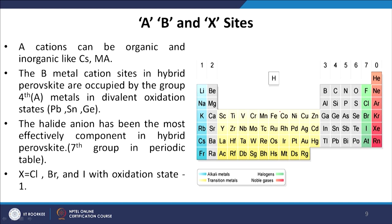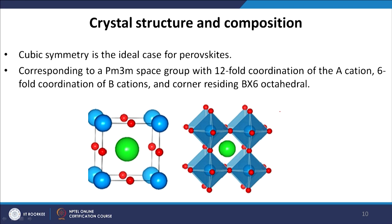A cations can be organic or inorganic, like cesium or CH3NH3 methylammonium. The B metal cation sites in hybrid perovskites are occupied by group four metals in divalent oxidation states like lead, tin, and germanium. The halide ions — seventh group elements like chlorine, bromine, and iodine with oxidation state of -1 — are the most effective component in hybrid perovskite. The ideal crystal symmetry corresponds to a Pm3m space group with 12-fold coordination of the A cation, 6-fold coordination of the B cation, and corner-sharing BX6 octahedra giving the cubo-octahedral geometry shown in the figure.